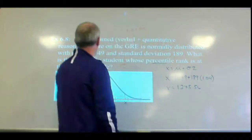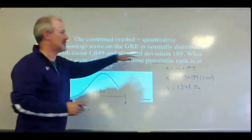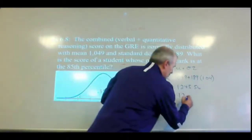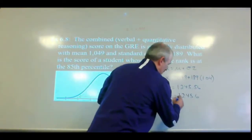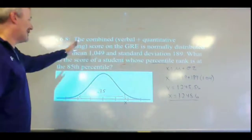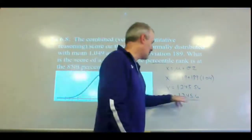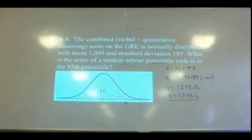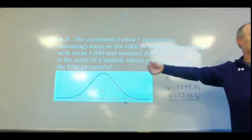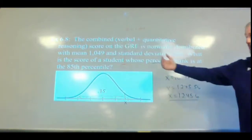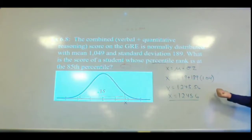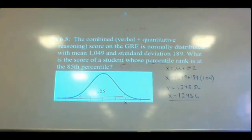Now we use our formula: x equals mu plus sigma times Z. Mu is 1,049, sigma is 189, Z is 1.04. Plug into your calculator — do the multiplication first for order of operations — and we get 1,245.56, so approximately 1,245.6. What we've done is go from the proportion to the raw data score. So there are two different types of problems: raw data score to proportion, and proportion to raw data score.